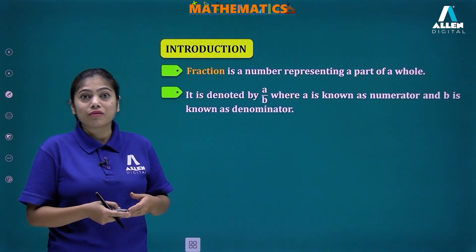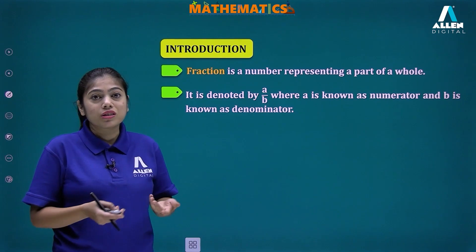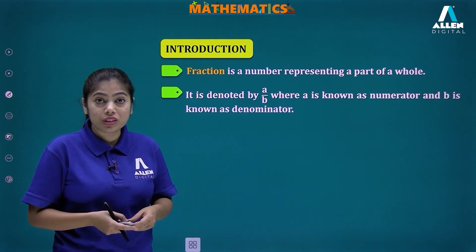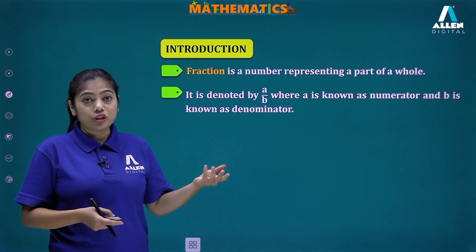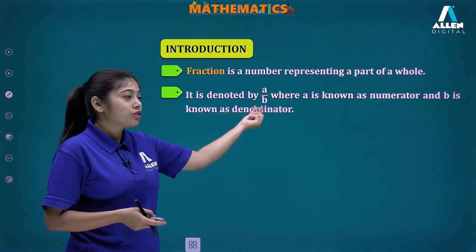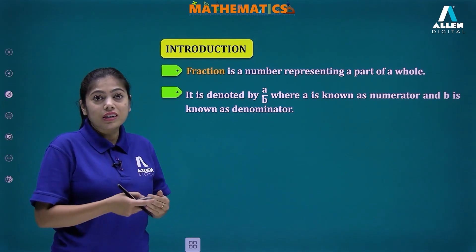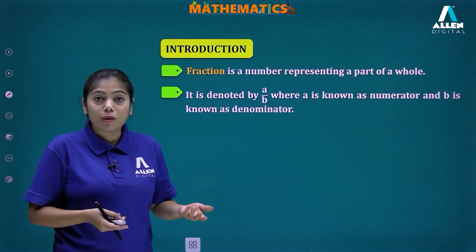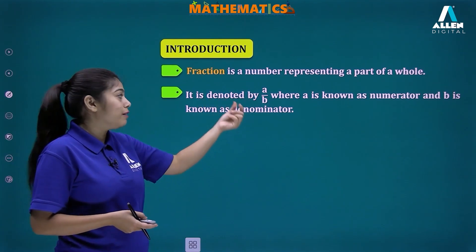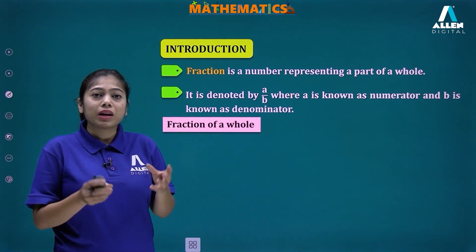Fractions are written in the form a upon b, where a and b are positive integers and b is not equal to zero. Here, a is known as the numerator and b is known as the denominator. Since b is written in the down direction — d for down and d for denominator — a is the numerator and b is the denominator.